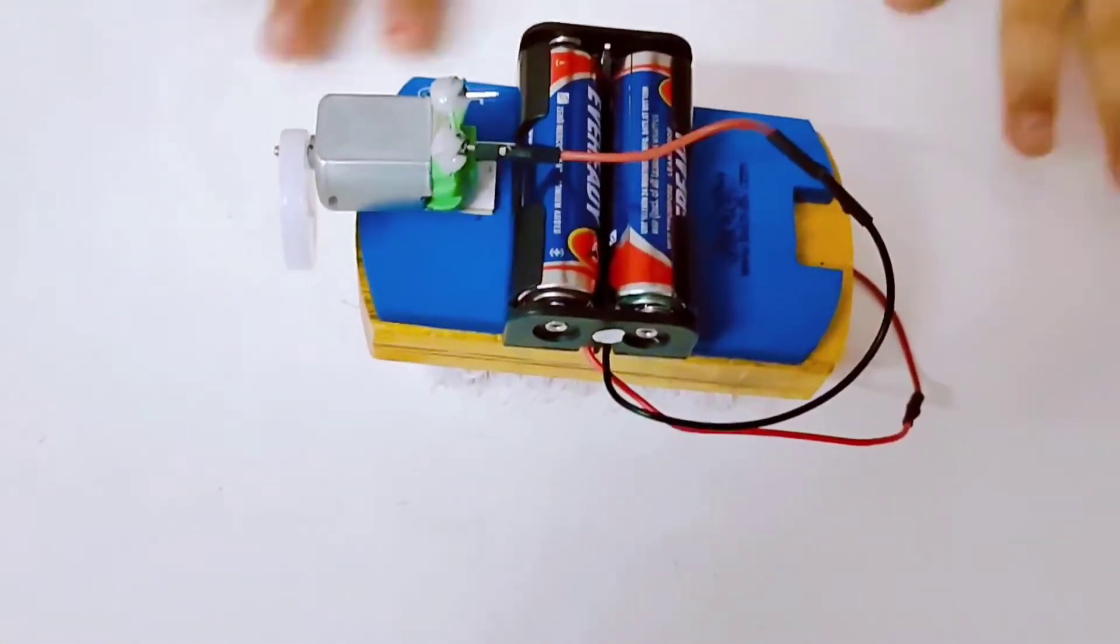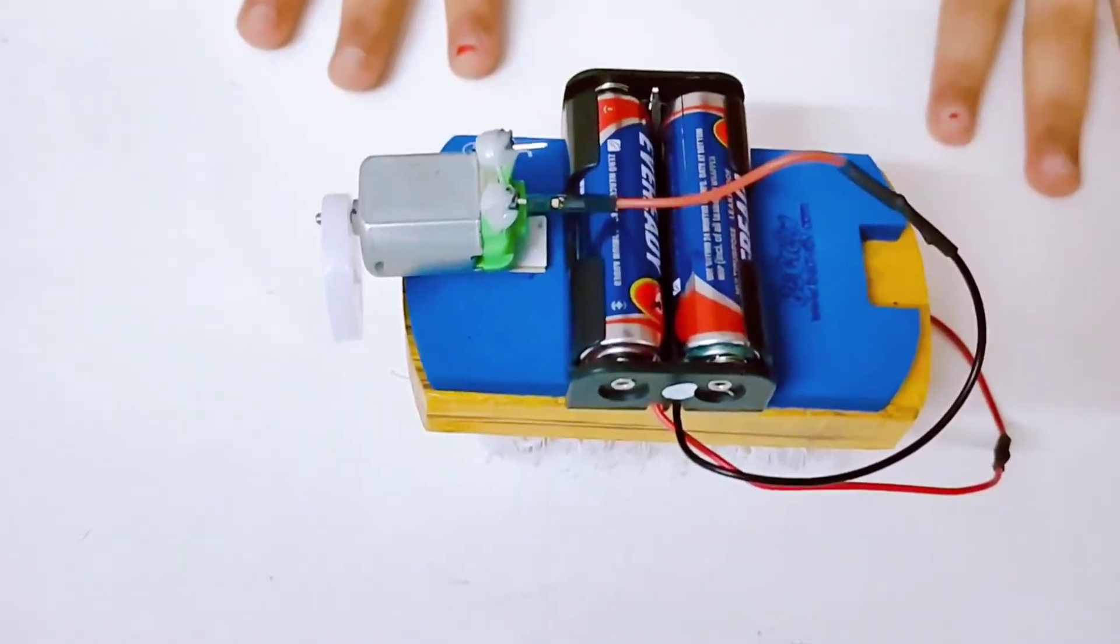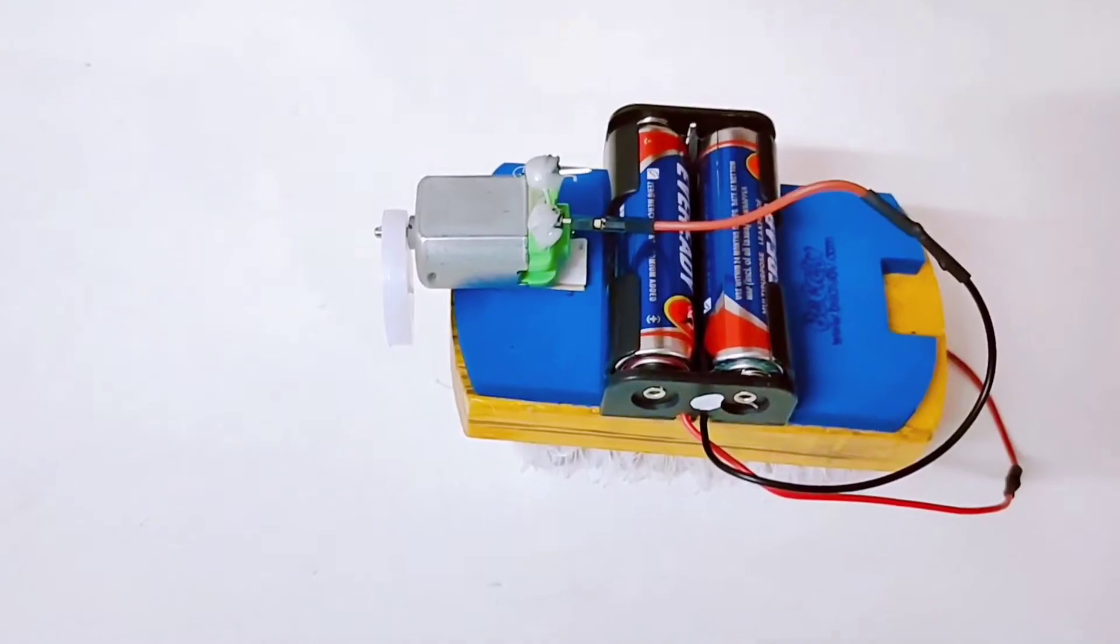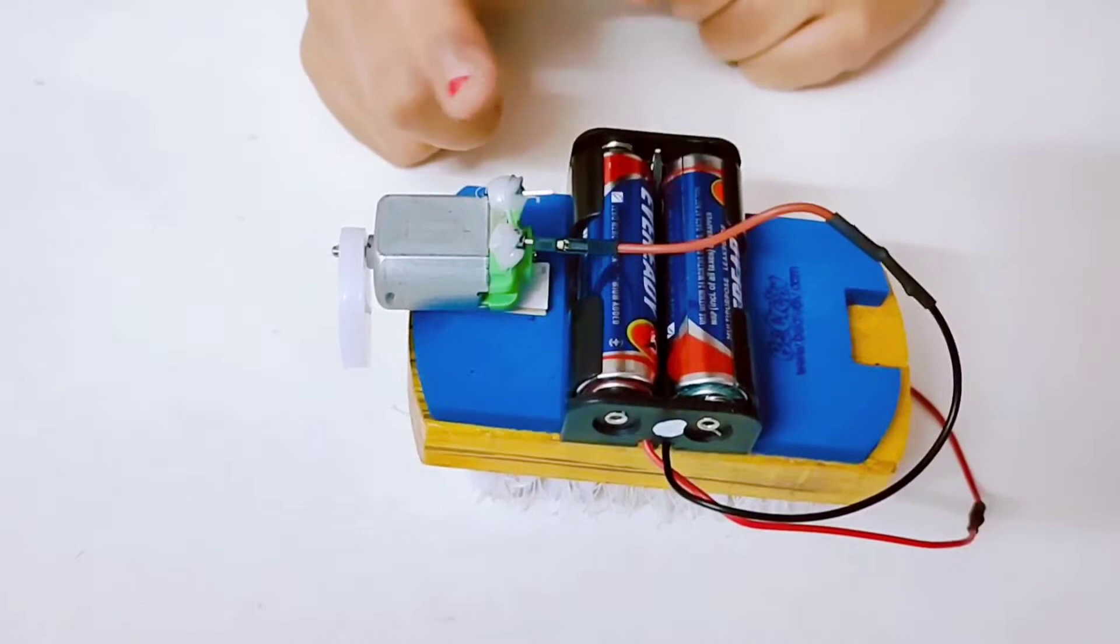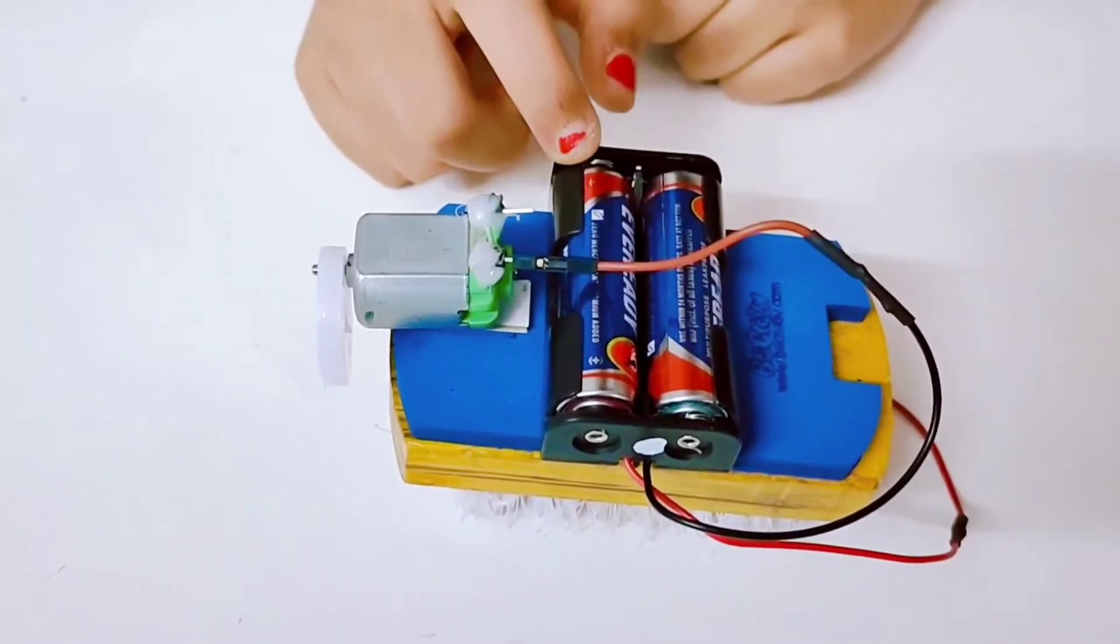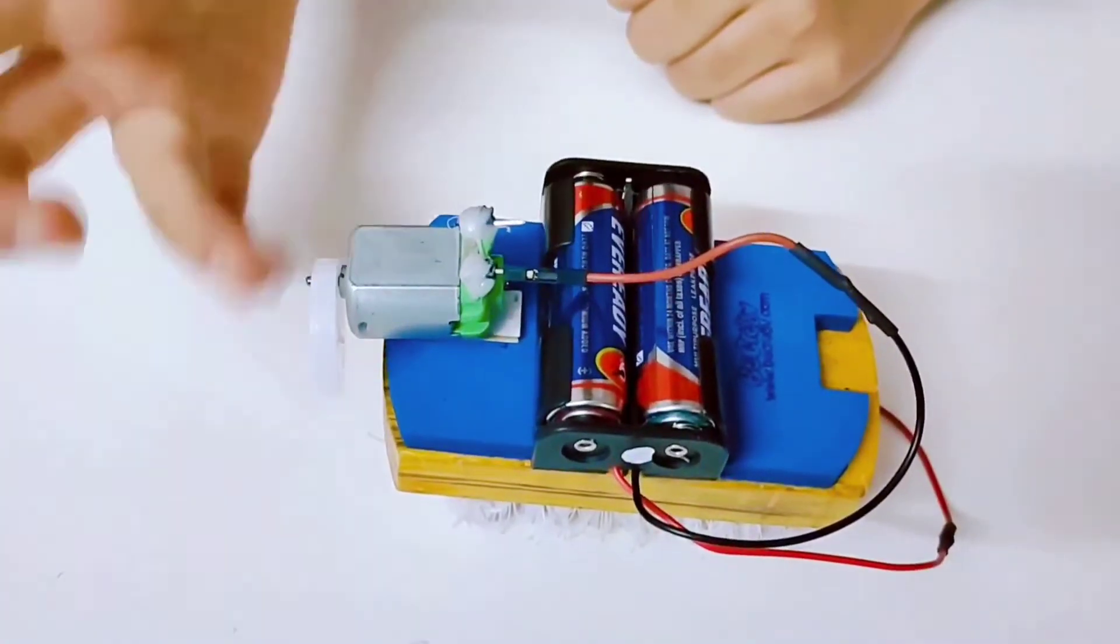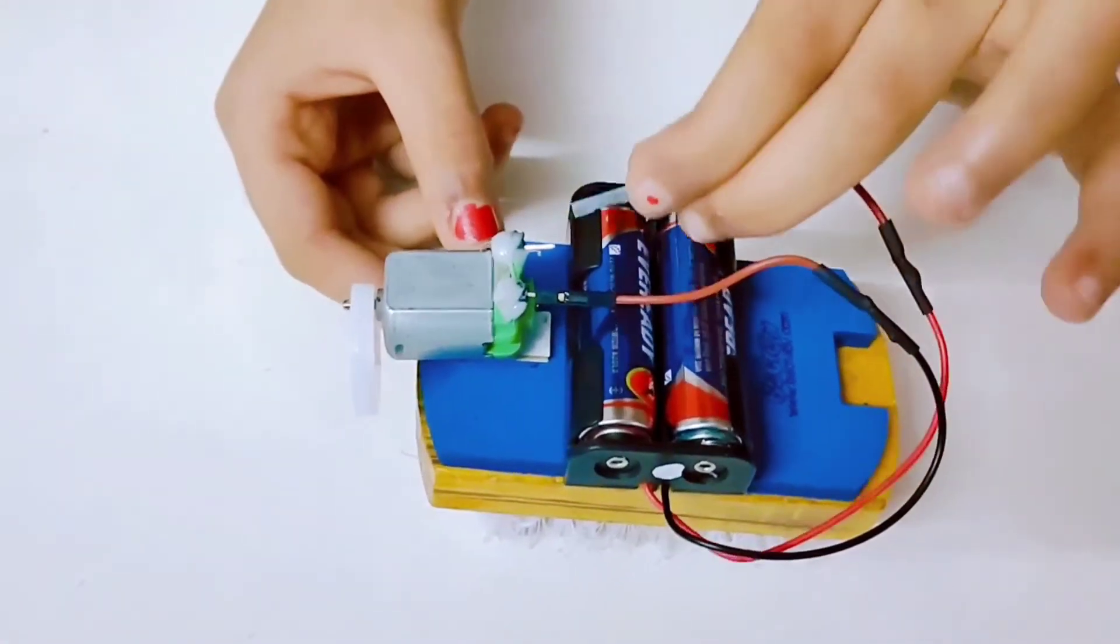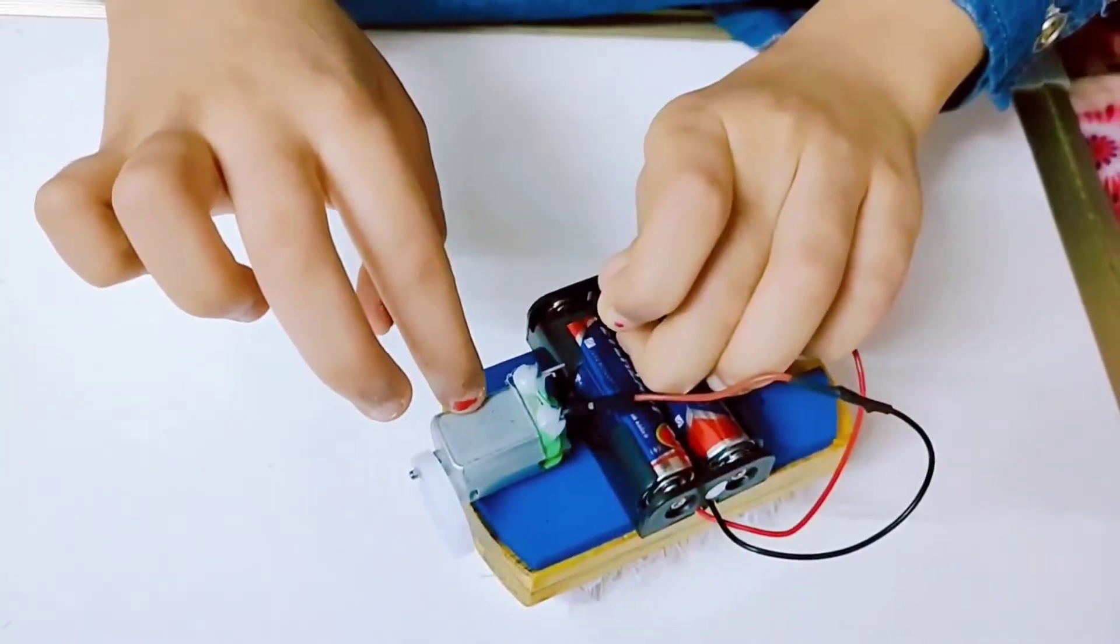So guys, this is step two from the instruction manual. You have to use the double-sided tape to stick the battery holder and the motor. And when you stick the motor, make sure the pins are up, away from the battery holder, and there's enough space for the spin of the motor. So here we go, just like that.